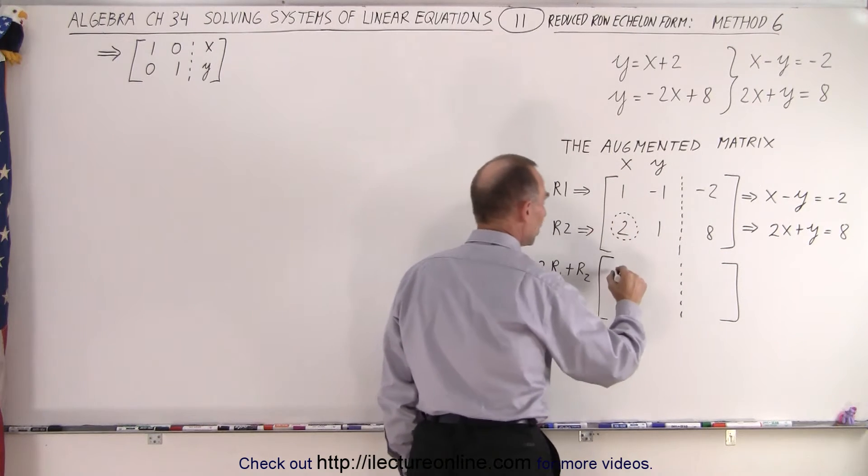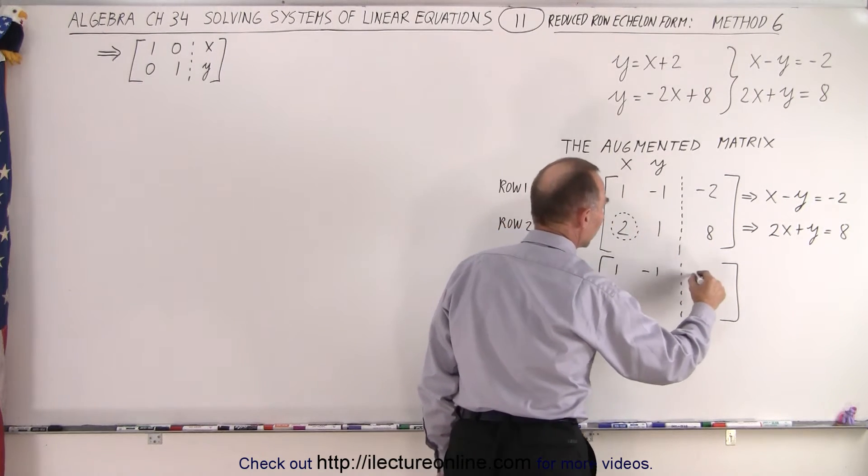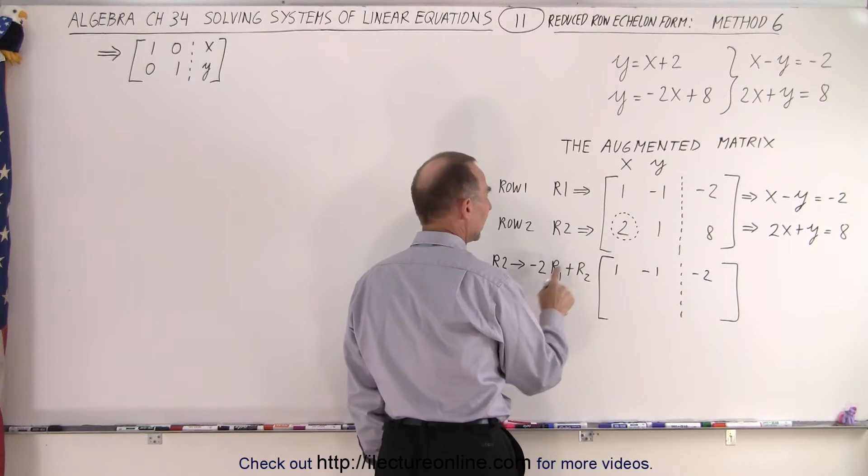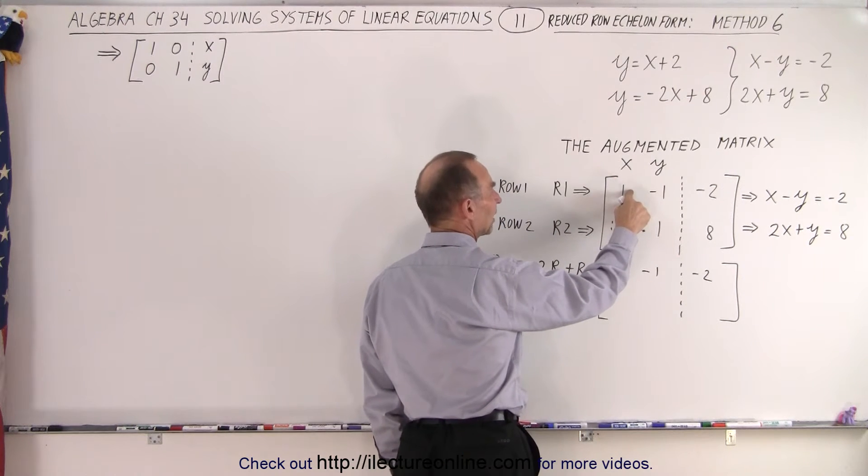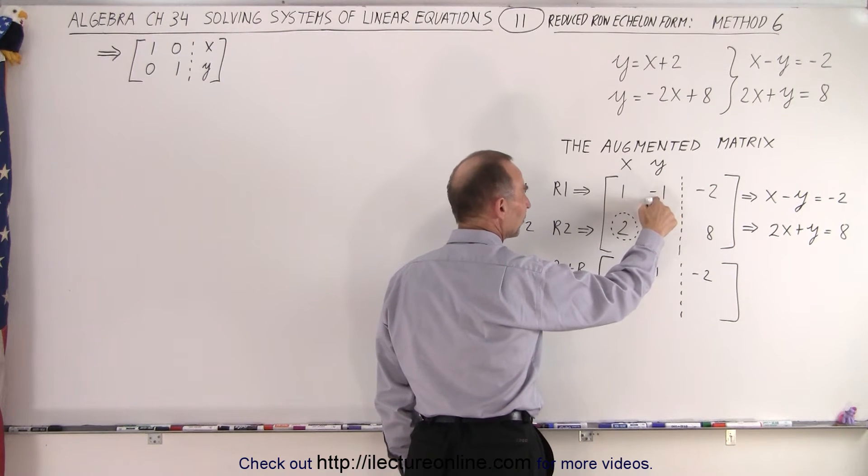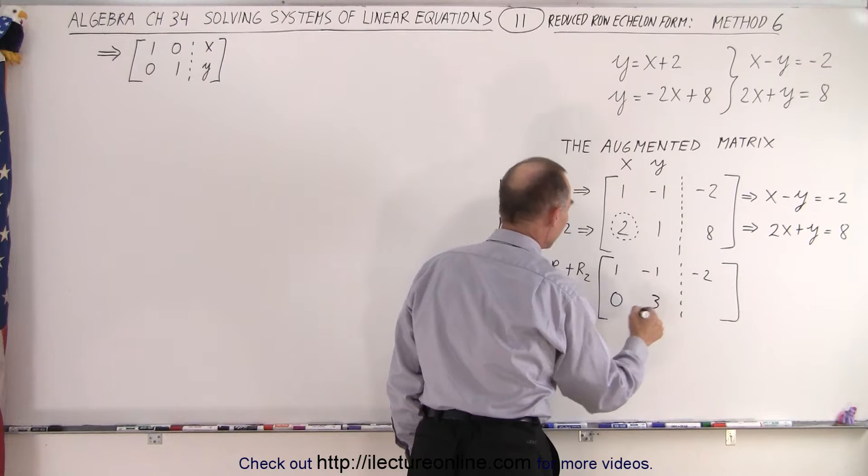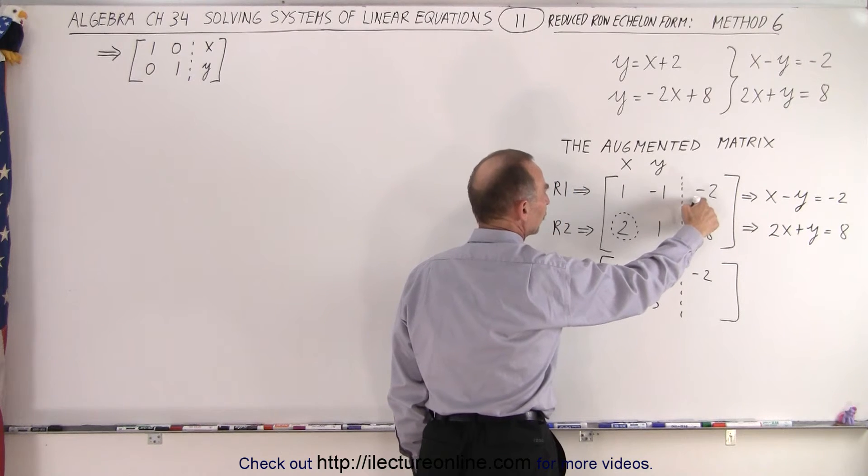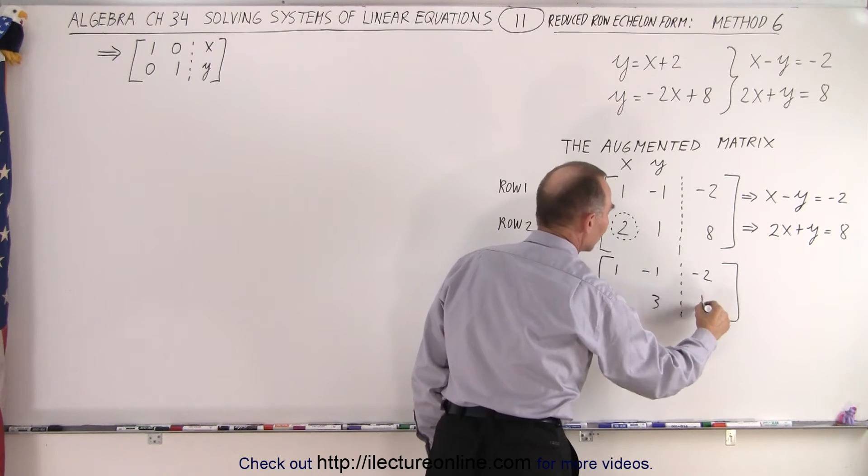Notice that row 1 doesn't change. So we have 1, negative 1, negative 2. But here, negative 2 times 1 is negative 2, added to 2 gives me 0. Negative 2 times negative 1 is positive 2, added to 1 gives me 3. And negative 2 times negative 2 is 4, added to 8 gives me 12.